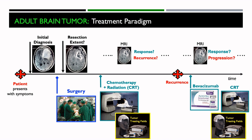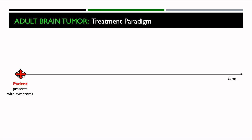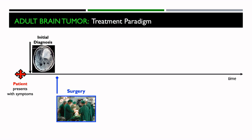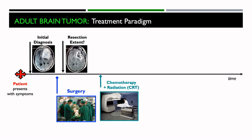As background, I have shown here the treatment paradigm for an adult brain tumor. It consists of a timeline of the various treatments the patient might undergo, and also the corresponding imaging to evaluate the tumor and the response to treatment. The timeline starts with the patient presenting with symptoms, then an MRI is performed to establish an initial diagnosis. Often the patient will go to surgery for tumor removal, and then another MRI is performed to determine the extent of resection. Commonly, this is followed by chemotherapy plus radiation therapy and continued MRI exams to determine if the patient or tumor is responding to therapy or might there be recurrence.